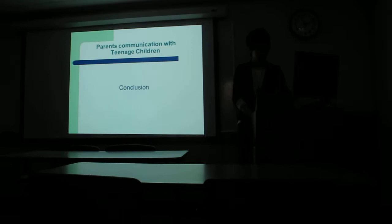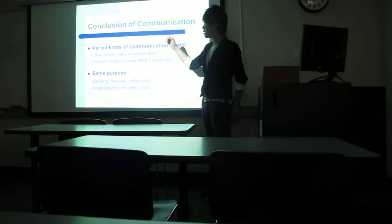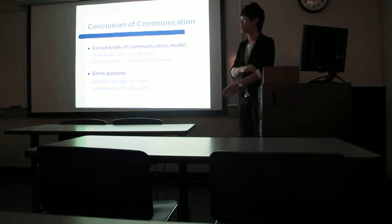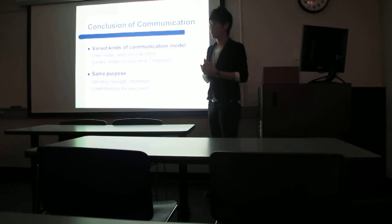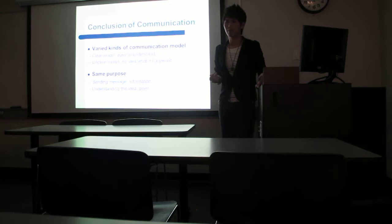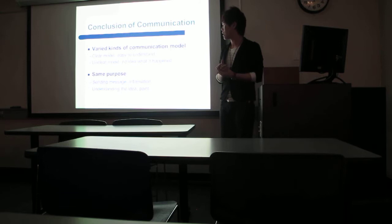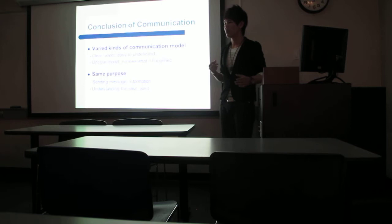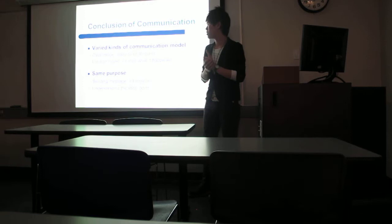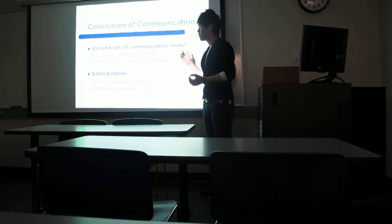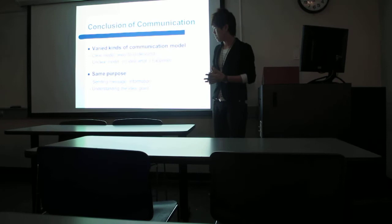The last part is the conclusion. There are various kinds of communication models in the internet or books. A clear model will let students or researchers easily understand what interpersonal communication looks like. But unclear models, they have no idea what happened, which means the process is not very clear or has less detail. But all models have one same purpose: sending messages to people or information, and understanding the idea or point. This is called communication. Thank you.